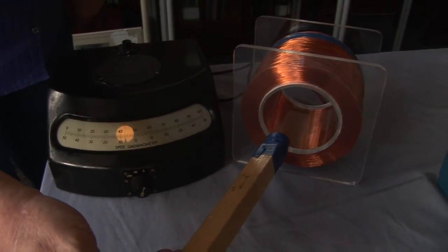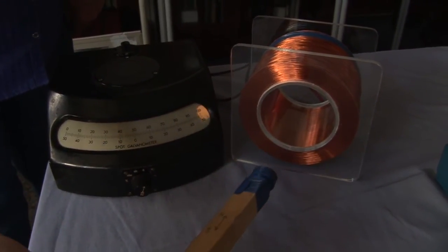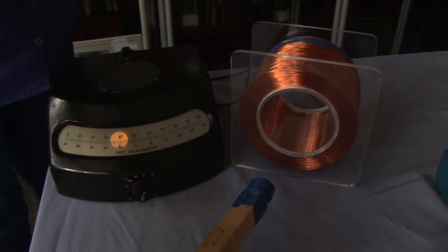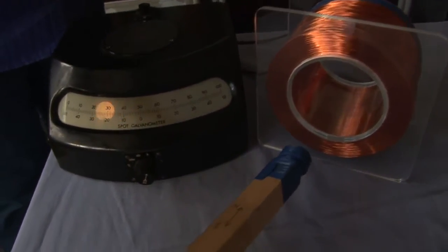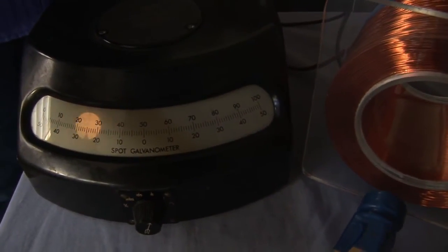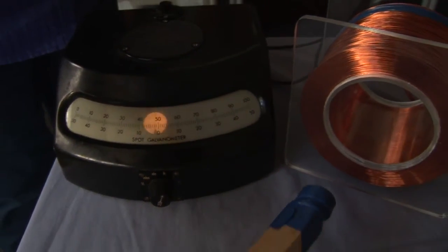We pull the magnet out and the electricity goes in the other direction. Push it in and it swings to your left. Pull it out and it swings to your right.